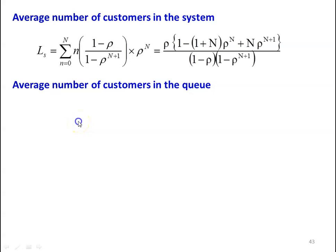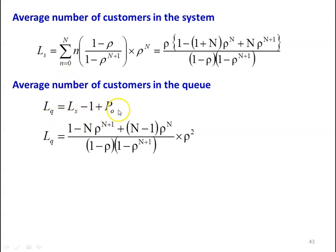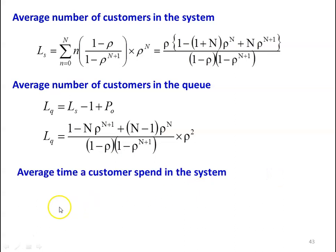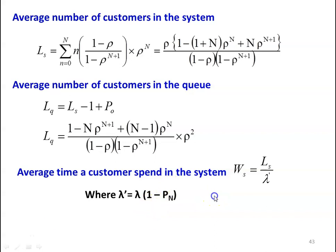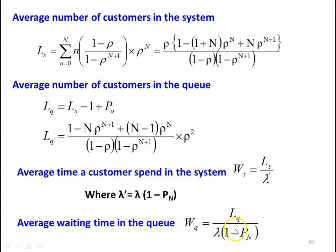The average number of customers in the queue: Lq = Ls − 1 + P0. Substituting for Ls and simplifying: Lq = ρ² × [1 − N·ρ^(N+1) + (N−1)·ρ^N] / [(1 − ρ)(1 − ρ^(N+1))]. Average time a customer spends in the system: Ws = Ls / λ', where λ' = λ(1 − P_N). Average waiting time in the queue: Wq = Lq / [λ(1 − P_N)]. These are the characteristics of Model 2.